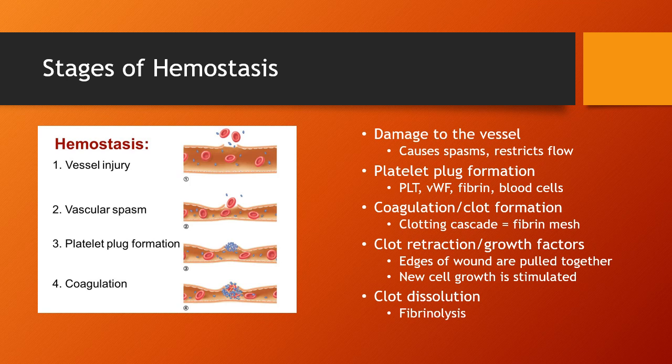The platelets change shape — they become spiky — and as they stick together they release other chemicals that attract more platelets, forming a big platelet plug. That enacts the clotting cascade and fibrin and red cells join in to create a big clot. The clot then tightens or retracts and pulls the edges of the wound together, while simultaneously releasing a stimulant for growth factor where new cell growth in the epithelium lining is generated and the vessel starts to grow itself back together.